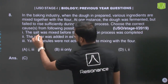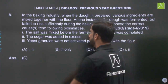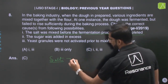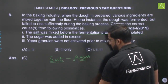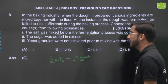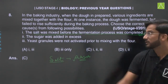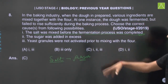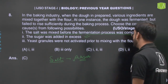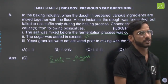Option A: The salt was mixed before the fermentation process was completed. Salt would absorb water from the solution, making it hypertonic, inhibiting the yeast. Option B: The sugar was added in excess amount. Excess sugar would also create a hypertonic solution, absorbing water molecules and inhibiting fermentation. Option C: The yeast granules were not activated prior to mixing with the flour — meaning the yeast was not properly incorporated into the ingredients.